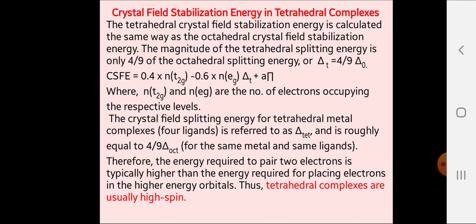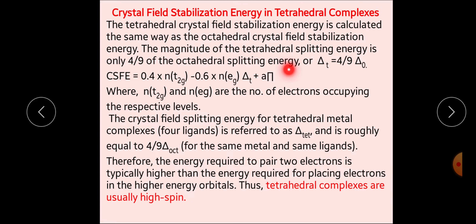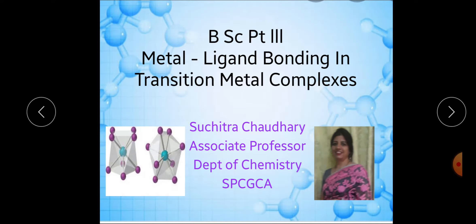First, we discuss about tetrahedral complexes. Tetrahedral complexes में crystal field stabilization energy को calculate करने के लिए हमारे पास formula है: CFSE is equal to 0.4 N(T2) minus 0.6 N(E) del T plus E(pi). यहाँ पर N(T2) और N(E) जो number of electrons हैं, in T2 orbitals and E orbitals. यहाँ पर ध्यान रखना है कि G subscript नहीं यूज होता है।